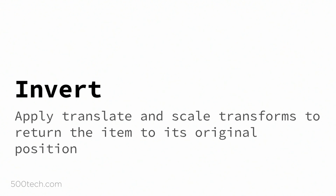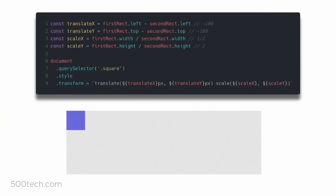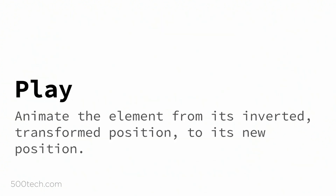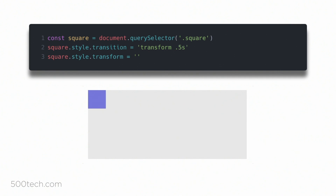Now this is the most complicated and important part: the Invert step. The top four lines are calculating the translate and scale transforms we need to apply to cancel out whatever changes have just occurred. We have to do this very quickly before the user has noticed any difference or movement in the element. To find the necessary position deltas, we're subtracting the current values from the previous values. To find the necessary scale deltas, we're dividing the previous size values by the current size values. And then we Play the animation — we add a simple CSS transition and allow the div to smoothly transition back to where it was. That's the simplest implementation of FLIP.